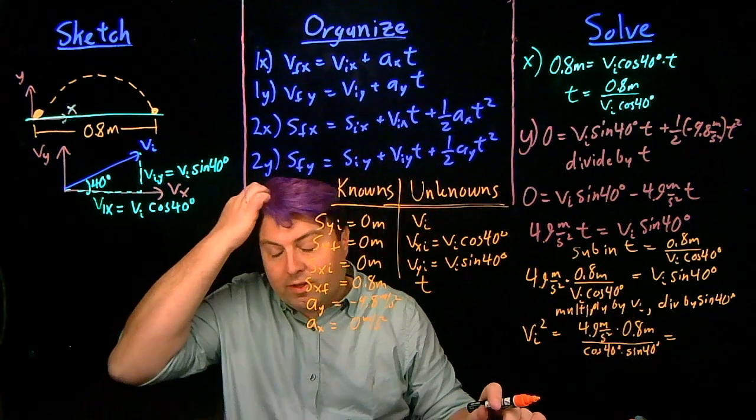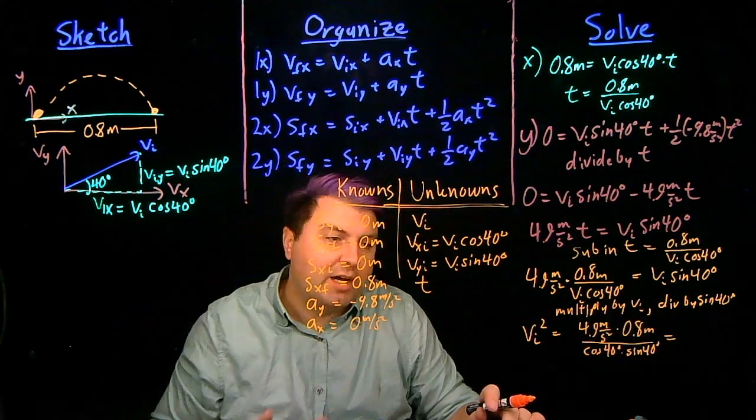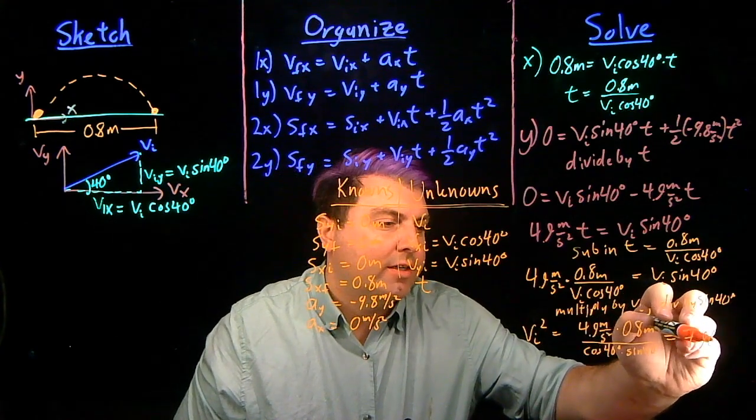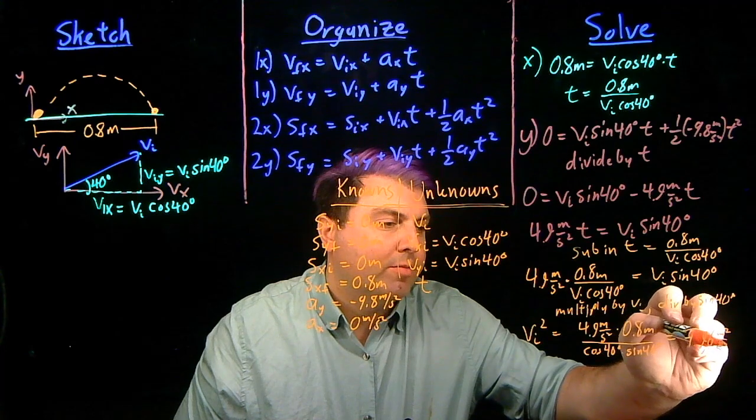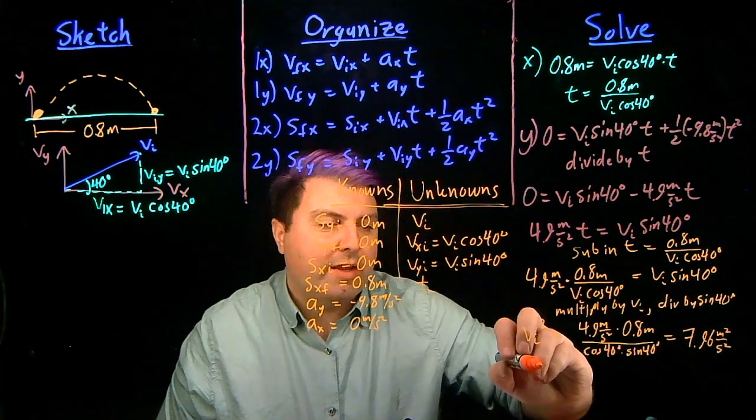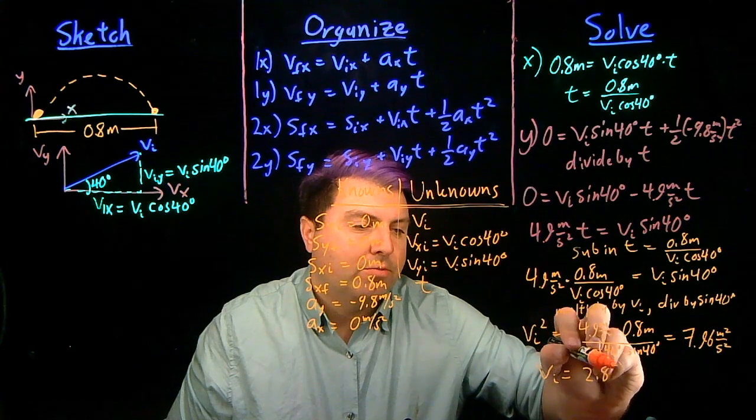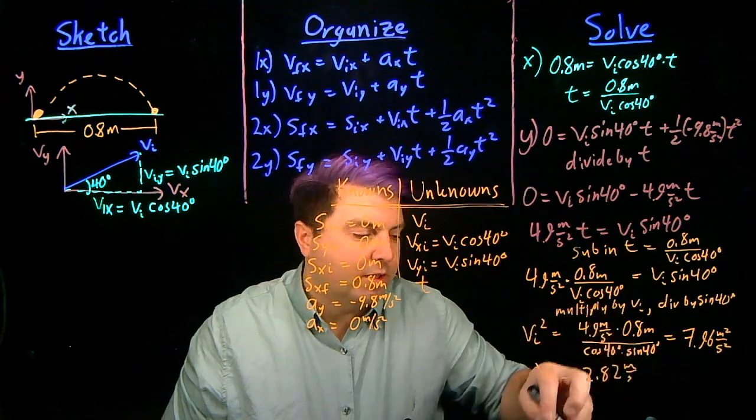So if you feel like you need the math, go ahead and pause and calculate. Otherwise, we're just going to go through it. So this will give us 7.96 meters squared per second squared. And then taking the square root of this, we have vi is equal to 2.82 meters per second.